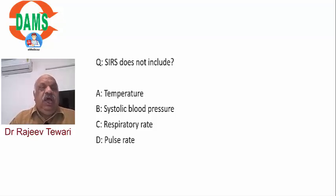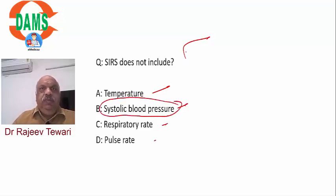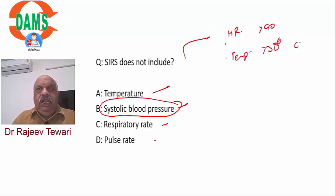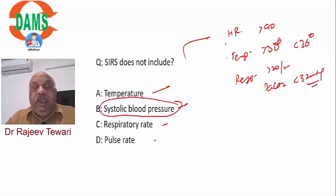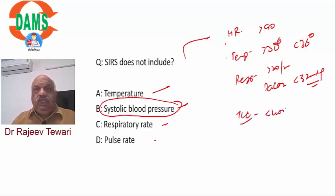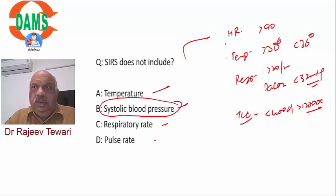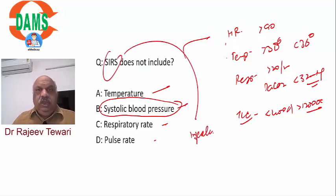SIRS (Systemic Inflammatory Response Syndrome) does not include systolic blood pressure. SIRS has four criteria: heart rate more than 90, temperature more than 38°C or less than 36°C, respiratory rate more than 20/min or PaCO2 less than 32 mmHg, and WBC count less than 4,000 or more than 12,000. Two of four must be positive to diagnose SIRS. If there is infection, it becomes sepsis. Severe sepsis = acidosis (lactate >4) or organ failure. Septic shock = systolic BP less than 90 mmHg.